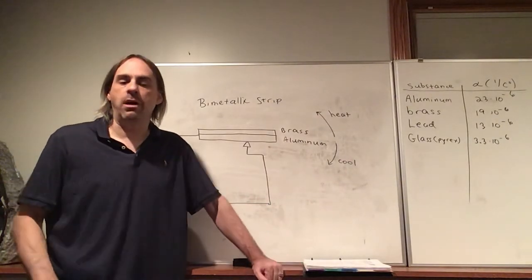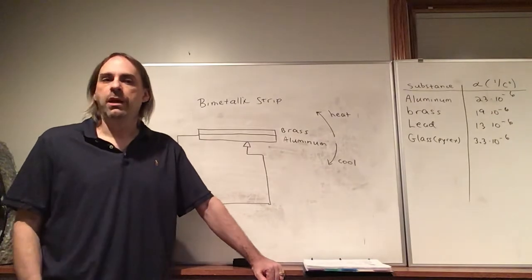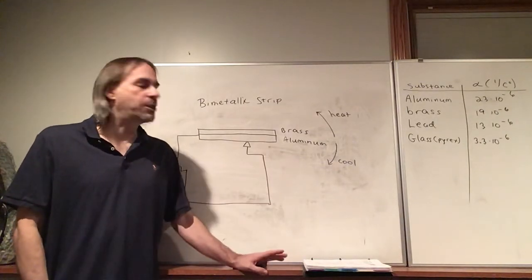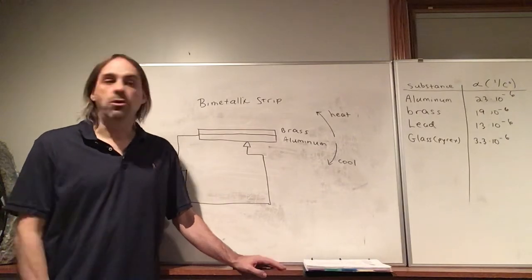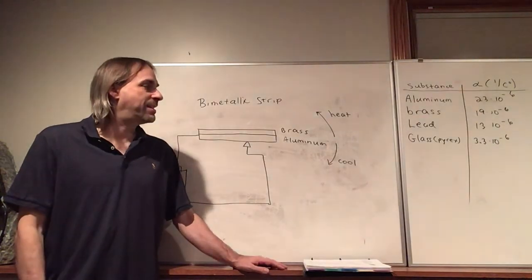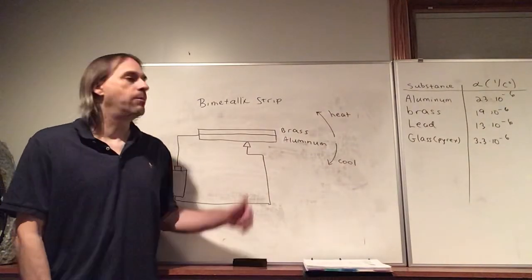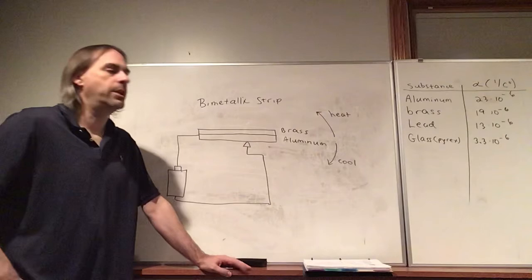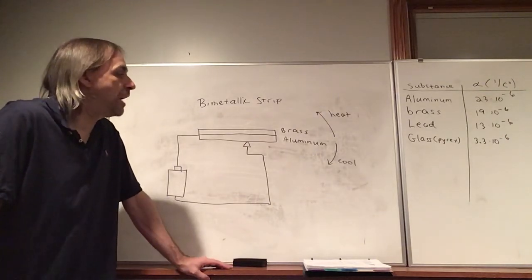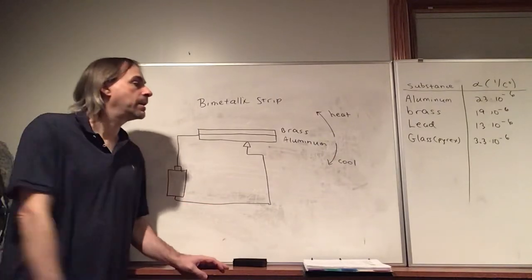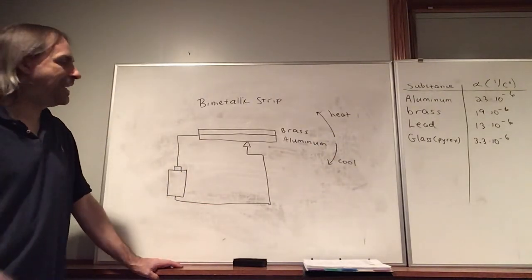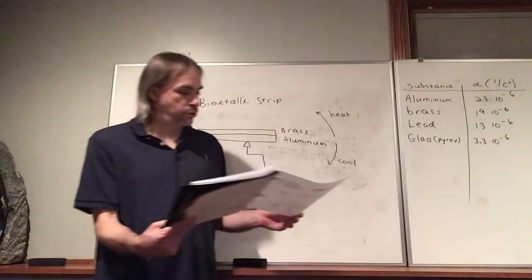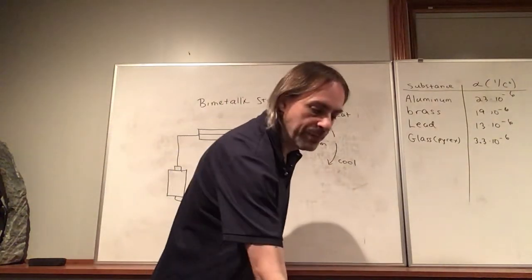The same principle is used in ovens: the gas turns on, heats up, turns off, cools a bit, then turns on again — maintaining temperature within a range. Set your oven to 350°F and it won't be exactly 350 all the time, but it stays close. That covers linear expansion and its applications.